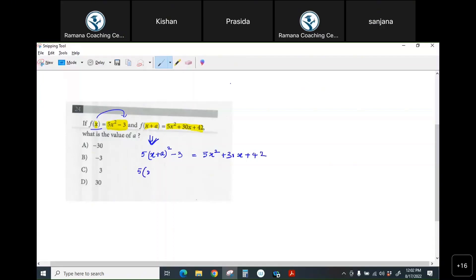What is (x+a) whole square? x² + 2ax + a² minus 3 equals 5x² + 30x + 42.